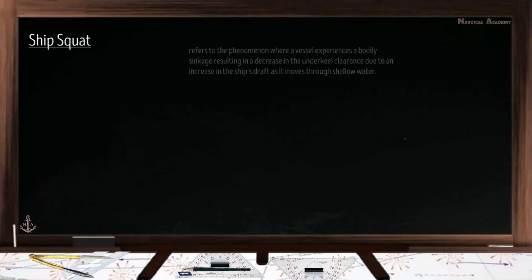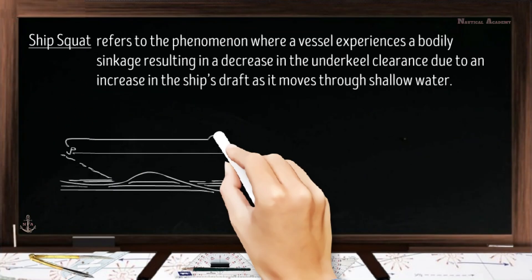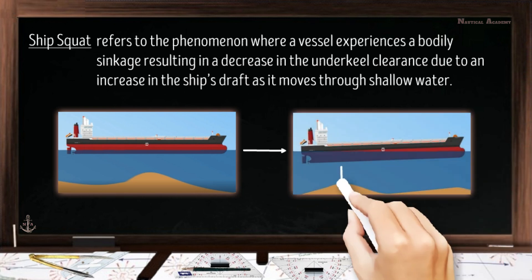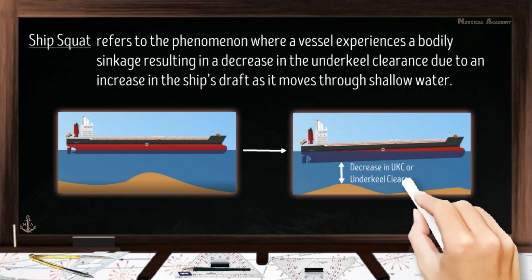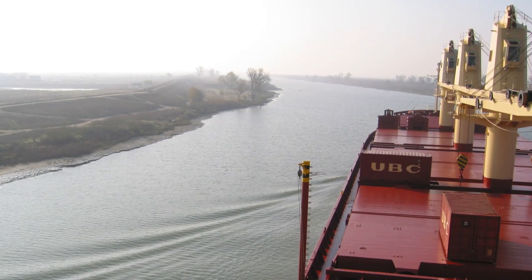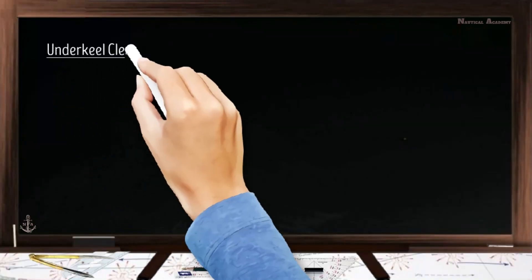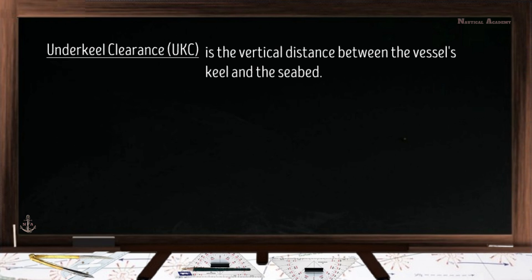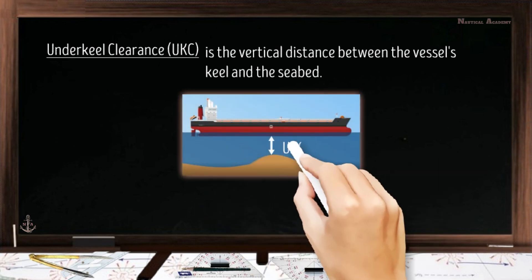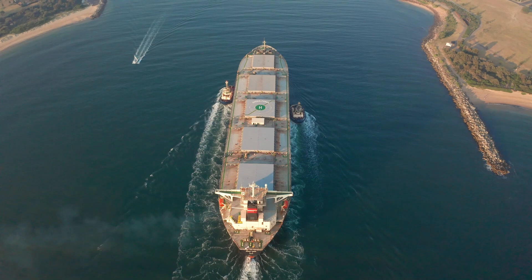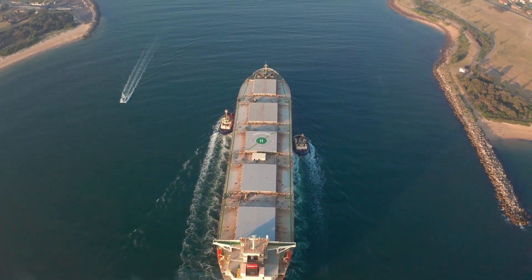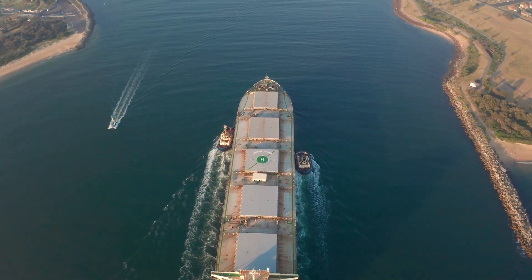Ship squat refers to the phenomenon where a vessel experiences a bodily sinkage resulting in a decrease in the underkeel clearance due to an increase in the ship's draft as it moves through shallow water. Underkeel clearance, or UKC, is the vertical distance between the vessel's keel and the seabed. This reduction in underkeel clearance is caused by the hydrodynamic forces acting on the ship.